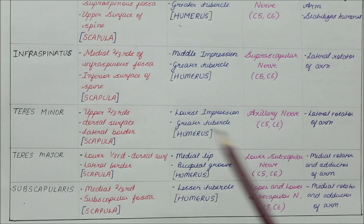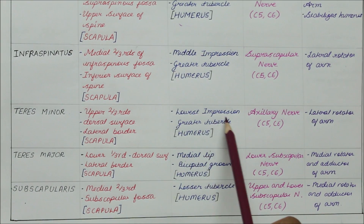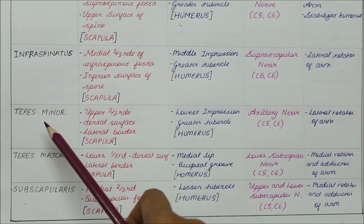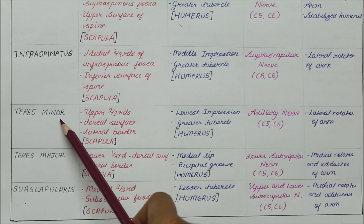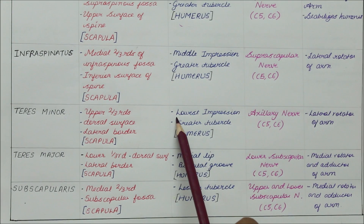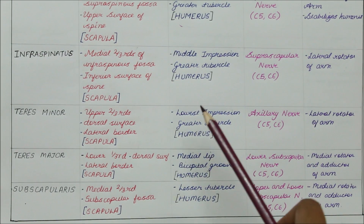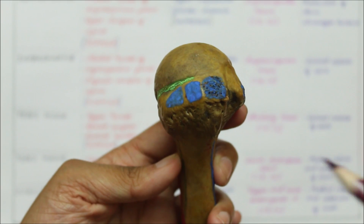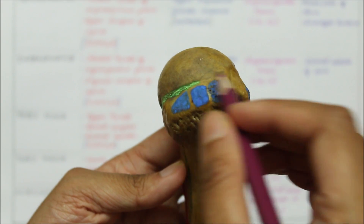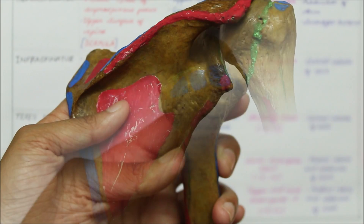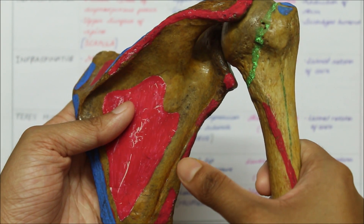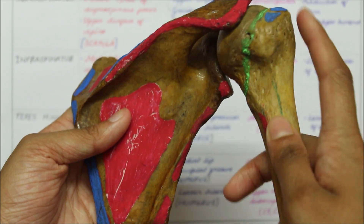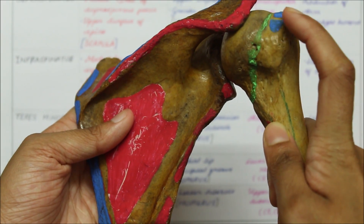Moving on to its insertion, the teres minor is inserted into the lowest impression of the greater tubercle of the humerus. To remember this, since it is a minor — a small child — to avoid it from falling down, it is kept at its lowest position. Therefore, the teres minor is inserted into the lowest impression of the greater tubercle of the humerus, right here. As a whole, the teres minor originates from the upper two-thirds of the dorsal surface of the lateral border right here, and inserts into the lowest impression of the greater tubercle of the humerus right here.